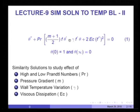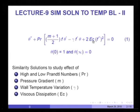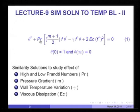We are interested in developing solutions to look at the effect of Prandtl number, pressure gradient, and the suction or blowing parameter embedded in the solutions for f, f dash, and f double prime. We also look at the effect of wall temperature variation gamma and viscous dissipation. I already obtained a solution for Prandtl equal to 1, m equal to 0, gamma equal to 0, and Ec equal to 0 in the last lecture. Now I want to look at the effect of very high and very low Prandtl numbers.